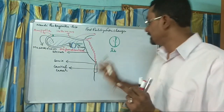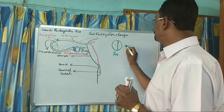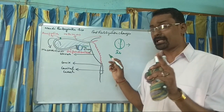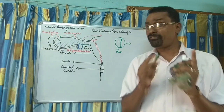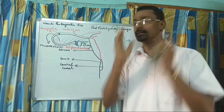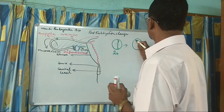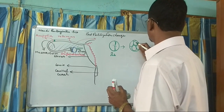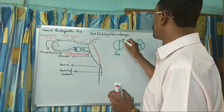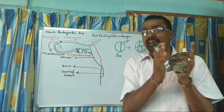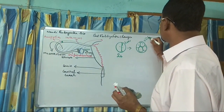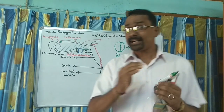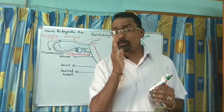Then comes the second cleavage. The bigger blastomere divides first, going from two to three cells, and ultimately the smaller one divides as well, giving us four blastomeres. The first cleavage takes around 30 hours and the second cleavage takes around 60 hours. These divisions are the same as mitosis — equational division, no reduction.